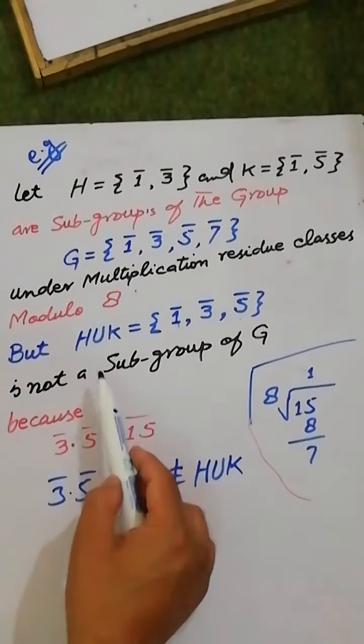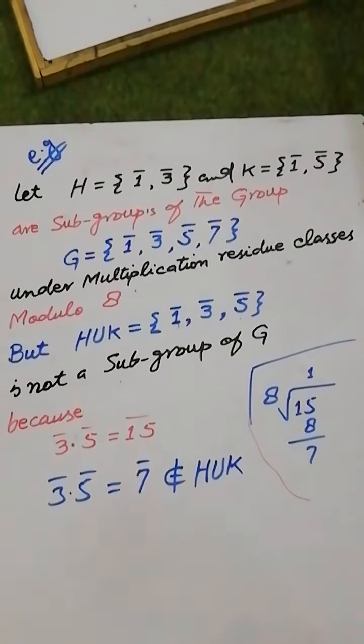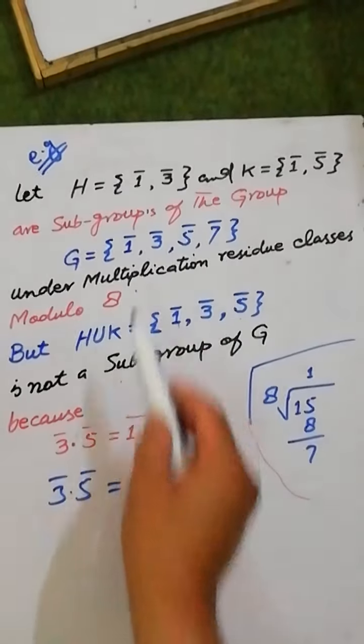Therefore, we can say that H union K is not a subgroup of group G under the binary operation defined on G.